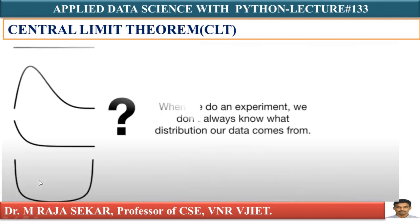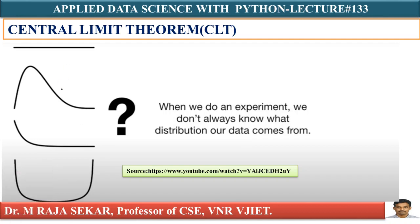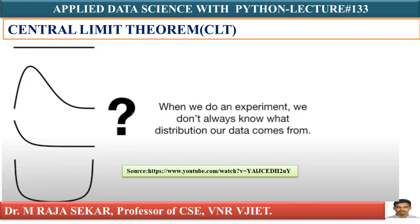Why am I repeating? This concept is very, very important. When we do an experiment, we do not always know what distribution our data follows. Your data related to the experiment may be left-skewed distribution, right-skewed distribution, uniform distribution — there are hundreds of distributions. Your experimental data may follow different distributions.